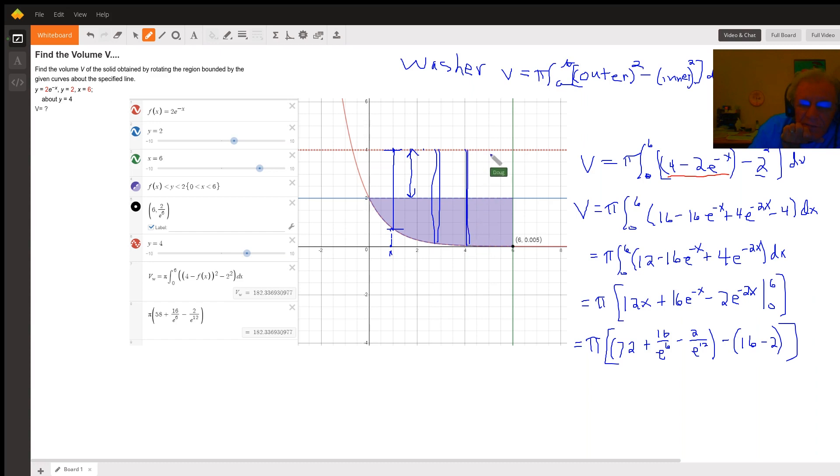By integrating along the x-axis, we're creating infinitely many shells, and they all fit the pattern, 4 minus 2e to the minus x, quantity squared minus 4. And it looks like that volume gave us 182.33.